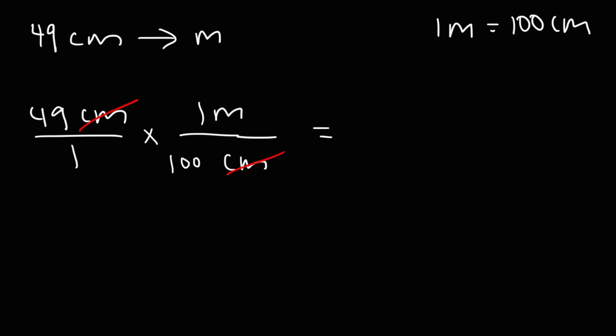When you're dividing a number by 100, to get the answer, move the decimal two units to the left. So it's going to be 0.49 meters. That's how we can convert from centimeters to meters.